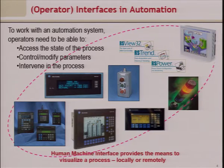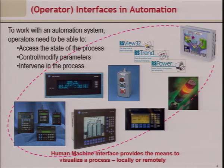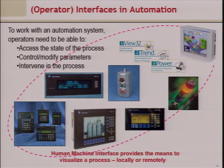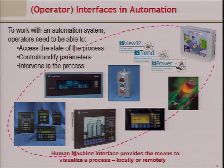Human Machine Interface — commonly called HMI — provides the means to visualize a process locally or remotely. A local HMI is directly on the system where the operator is working. Sometimes you want to monitor centrally, for example monitoring one lakh towers sitting in a room — that is basically remote monitoring. User interface will be either local or remote.